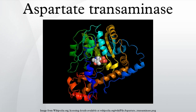Two isoenzymes are present in a wide variety of eukaryotes. In humans, GOT1 (cAST), the cytosolic isoenzyme, derives mainly from red blood cells and heart. GOT2 (mAST), the mitochondrial isoenzyme, is present predominantly in liver. These isoenzymes are thought to have evolved from a common ancestral AST via gene duplication, and they share a sequence homology of approximately 45%.